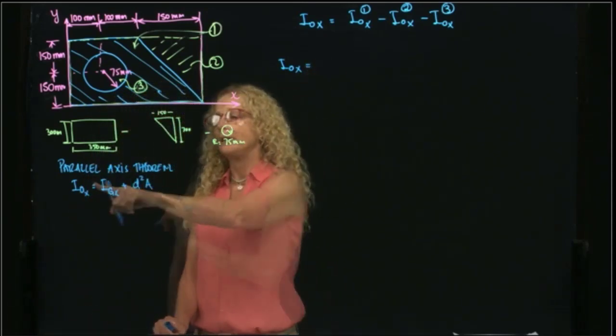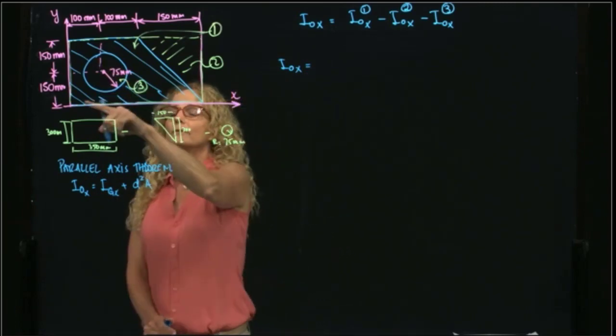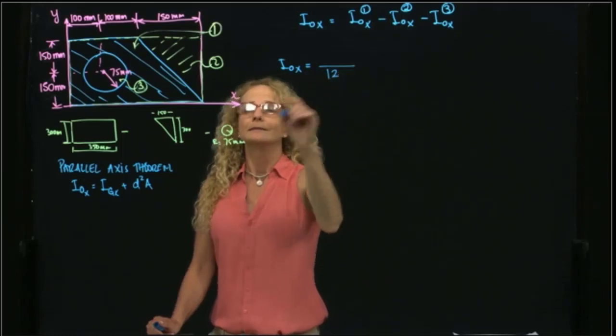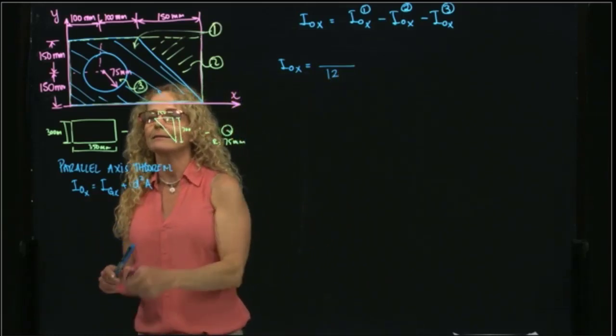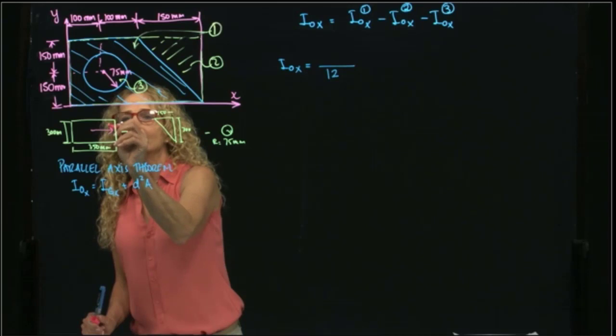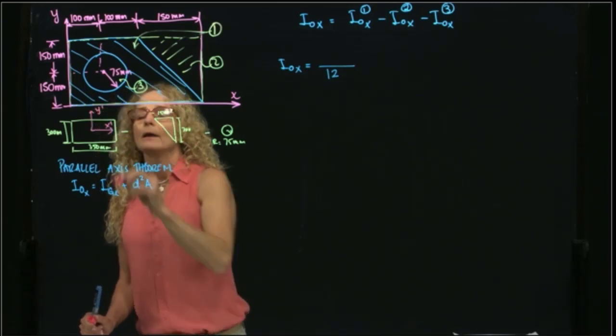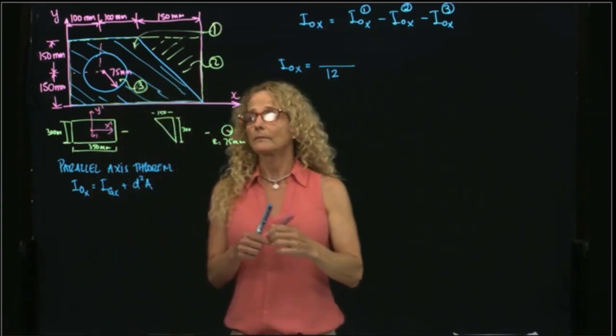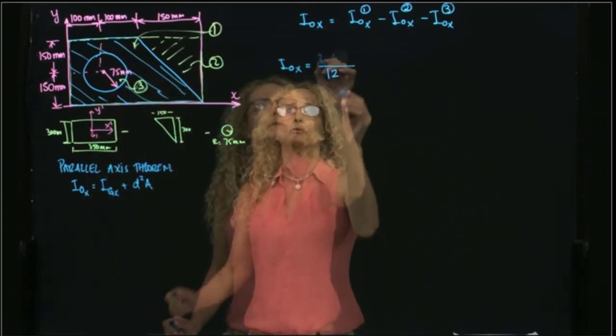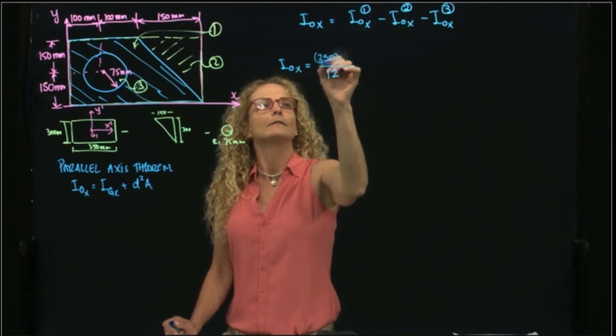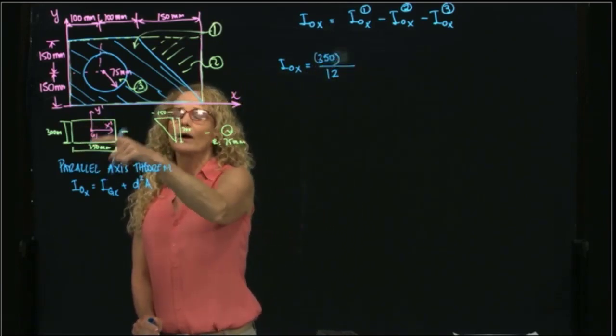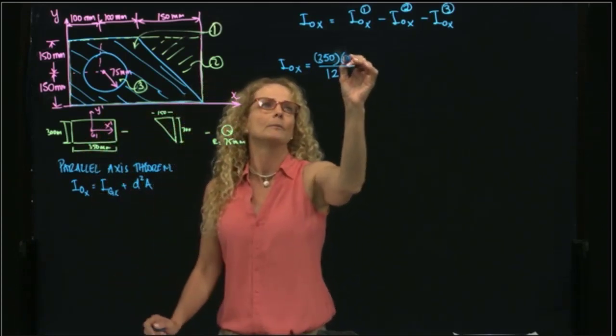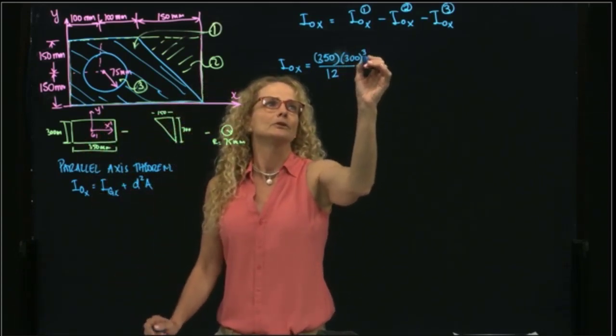So my area moment of inertia of this rectangle will be 1/12. Since I am calculating with respect to the x-axis, so it will be this x-axis. And this is my center of gravity of that figure. The base is equal to 350. And since I am calculating with respect to x, the one that is cubed is the one perpendicular to the x-axis, so it will be the height, which is this one right here.